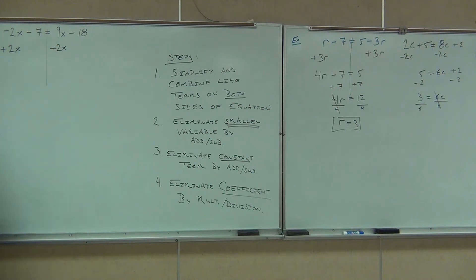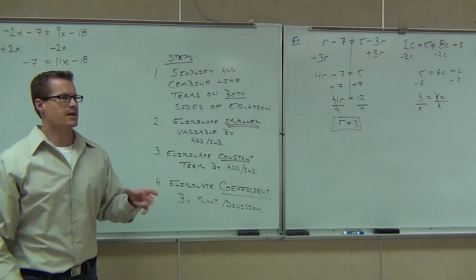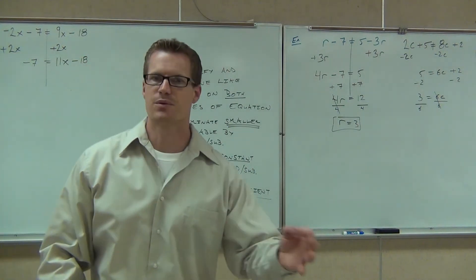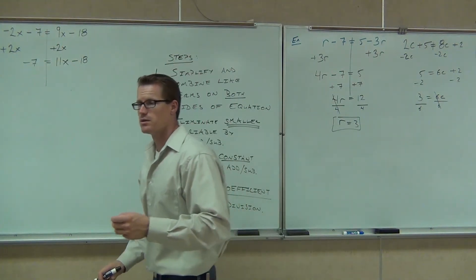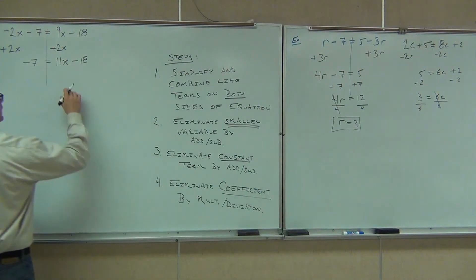So we'll have what on the left-hand side? We have that sign still. On the right-hand side, how much do we get? 11x plus 18. As soon as we get rid of that smaller variable, then we have something we can work with. So we get rid of our constant term. What's our constant term here? Negative 18. How are we going to get rid of that? Add 18 to both sides.